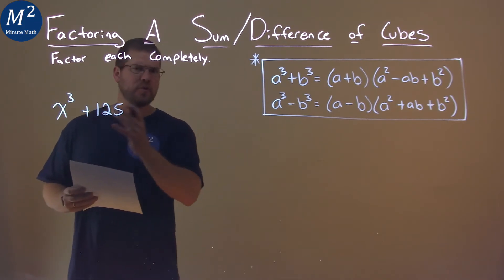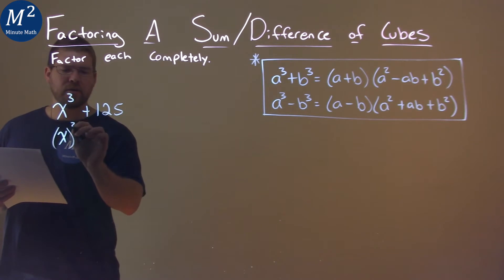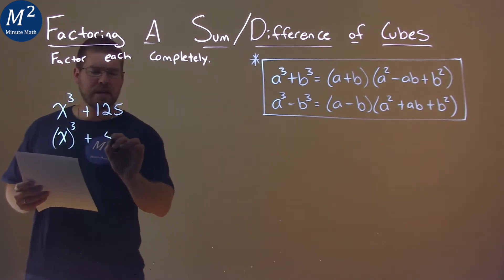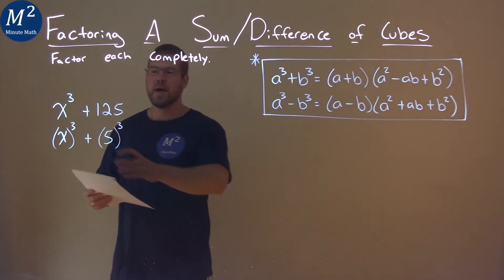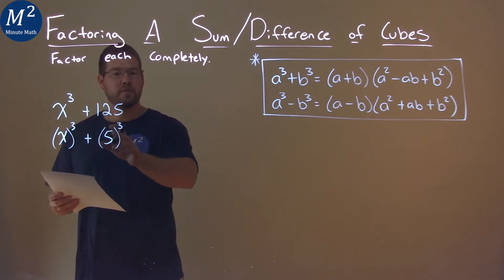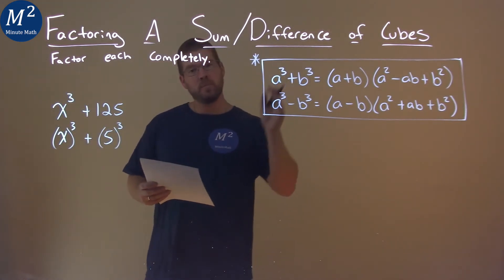Can we break it down as two different cubes? Well, x cubed clearly, we have x value cubed. 125 is the same as 5 cubed. So now we have x cubed plus 5 cubed, and we have our form a cubed plus b cubed.